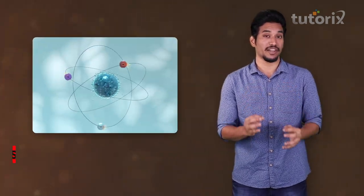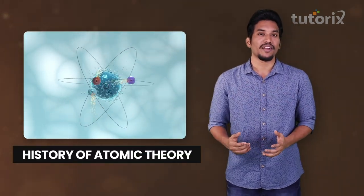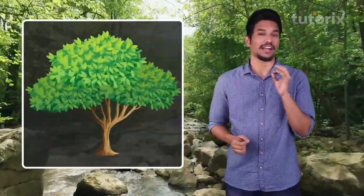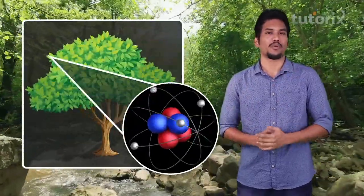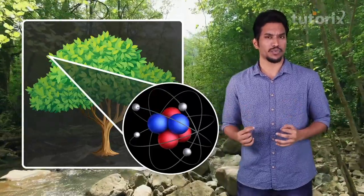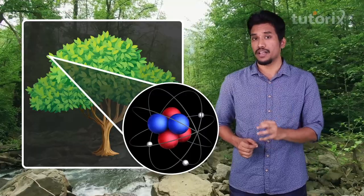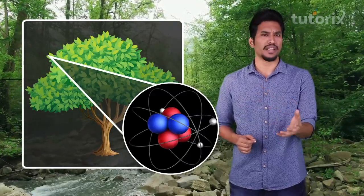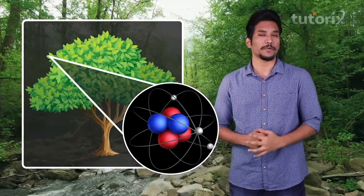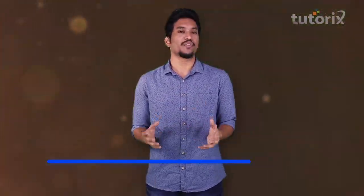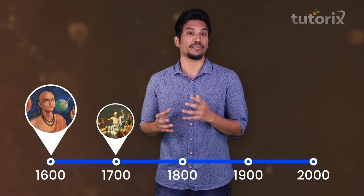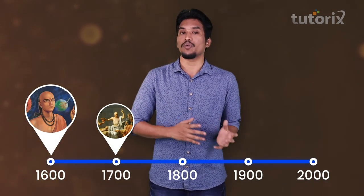Hey guys, today we'll be discussing the history of the atomic theory. Whatever you see around is made up of some entity, and that entity is nothing but an atom. Many scientists were very curious whether this atom is the last indivisible thing or if there is something else to it. In this video, we'll be mapping out the history of the atomic theory and how it evolved.